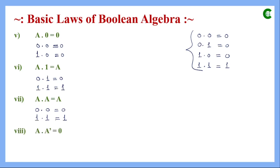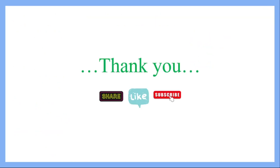The last basic law is a AND complement of a equals 0. If a is 0, then complement of a is 1, and 0 AND 1=0. If a is 1, then complement of a is 0, and 1 AND 0=0. So whatever value a takes, multiplying a Boolean variable by its complement always gives 0. These are the eight basic laws of Boolean algebra needed whenever simplifying a Boolean expression to use a minimum number of gates. In the next class we will learn some advanced laws. Till then, stay tuned. Thank you.